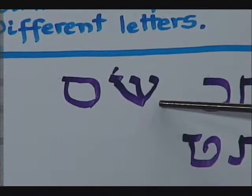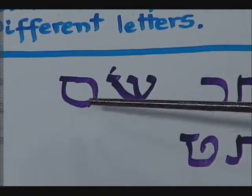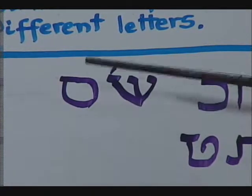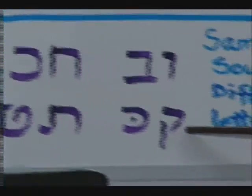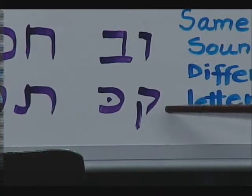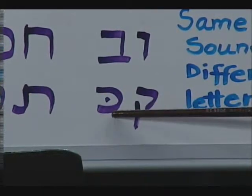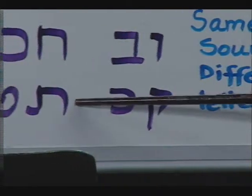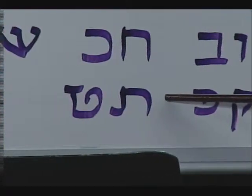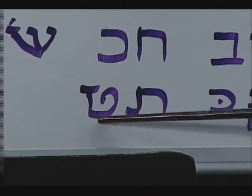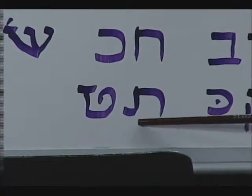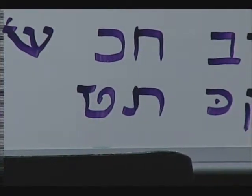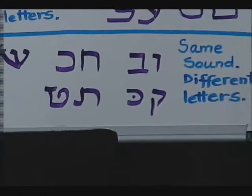We have the sin on right, and then the samech. They're both making an S sound. Moving down to the next row, we have the kuf, and then we have the kaf. They're both making a K or a hard C sound. And then we have the tav, which we spoke about, and the tet. And they both are identical in sound. They both make the T sound. And that's why this section is called Same Sound, Different Letters.